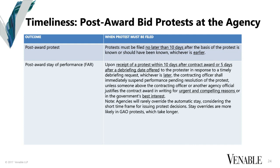In the post-award world, where the majority of protests are, there's the familiar rule at the GAO — the 10-day rule: 10 days after you knew or should have known the basis of protest, whichever is earlier. This is why you ought to be thinking long before an award is made about whether this procurement is important enough to your company that it might be one you'd explore protesting if the result does not turn out as you hoped. It's never a good idea to be thinking about a protest only when you get the disappointed offeror notice and think you're not happy with this.